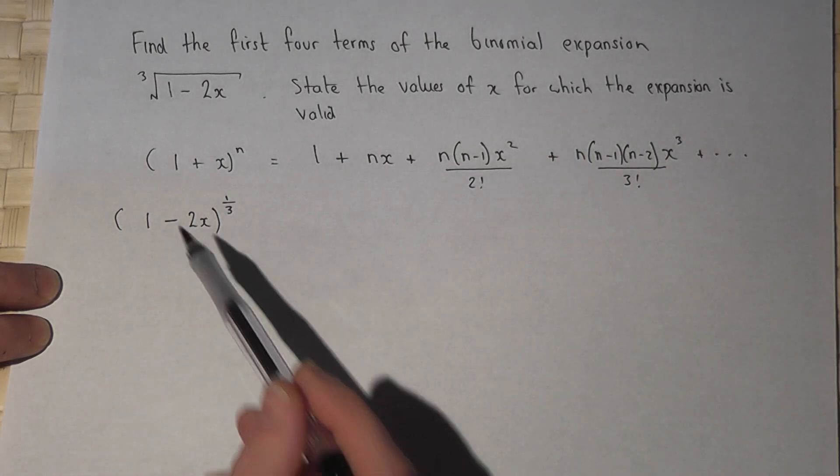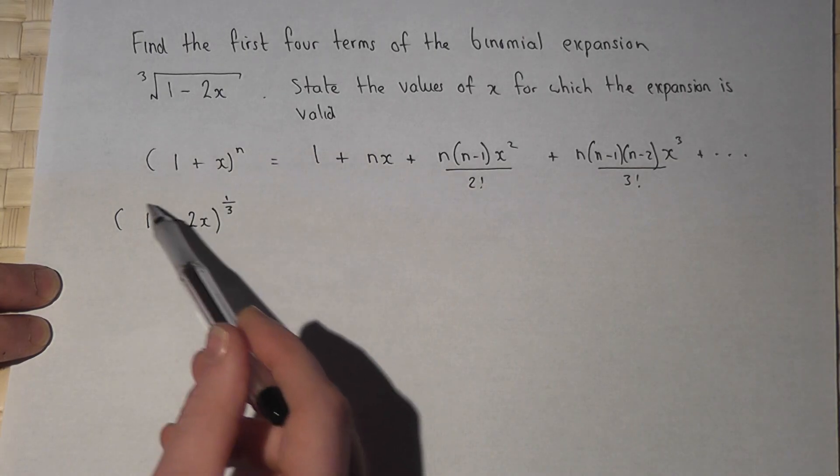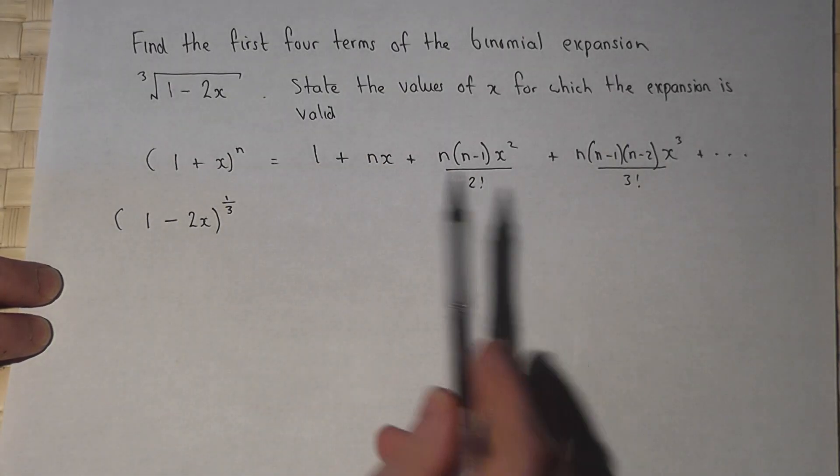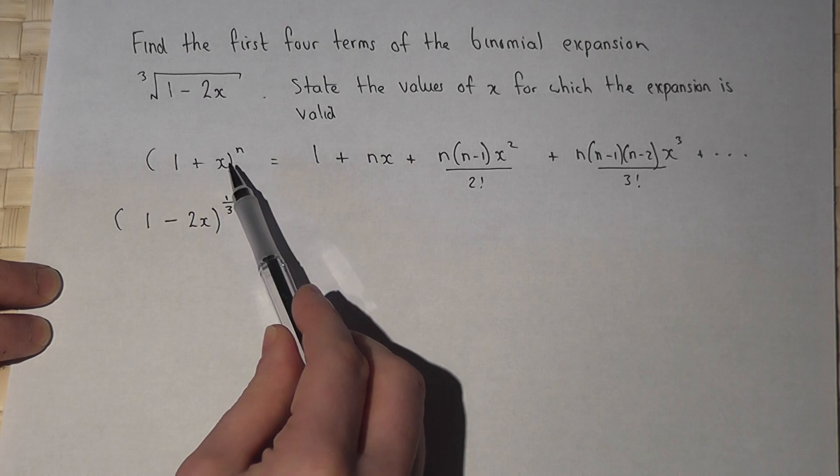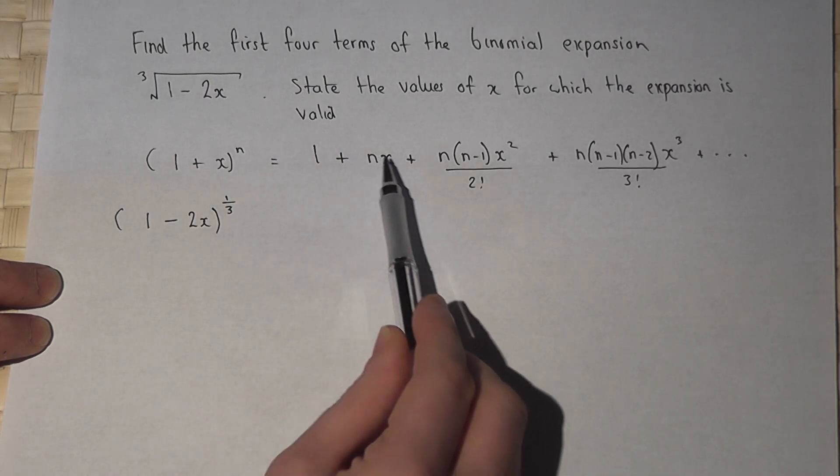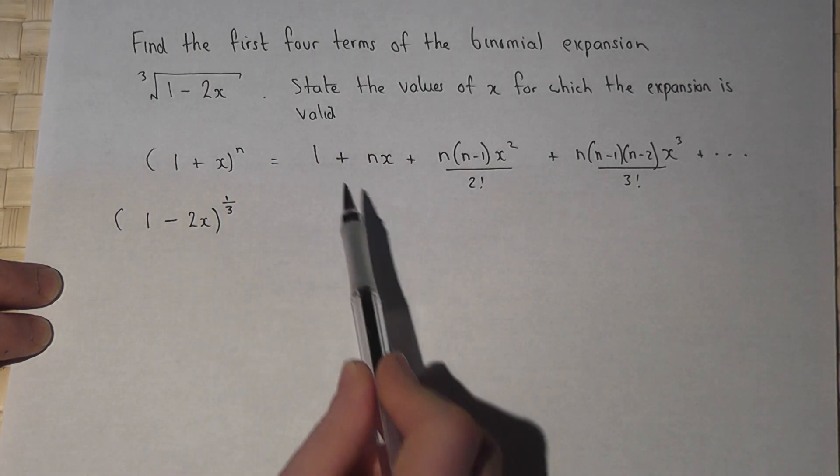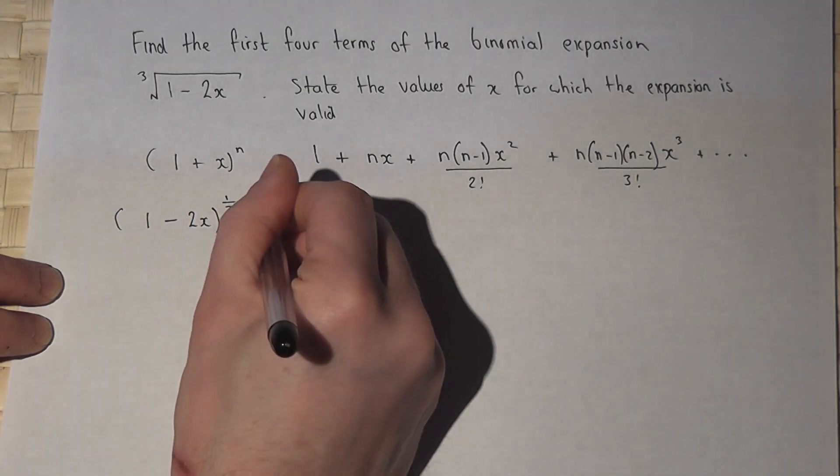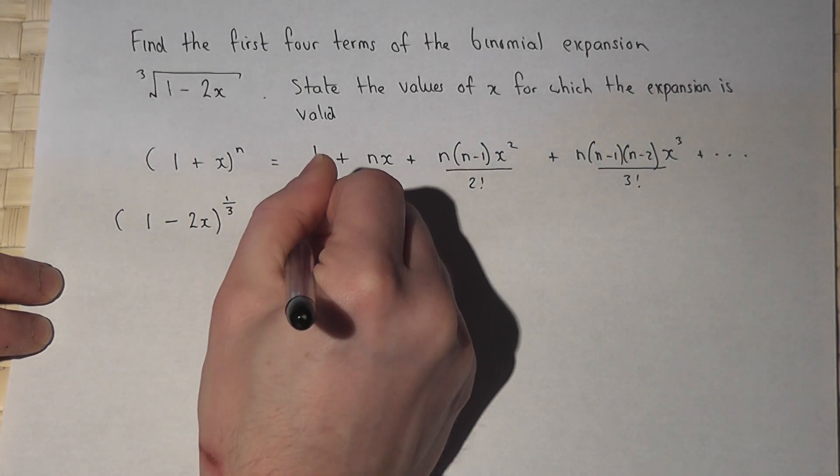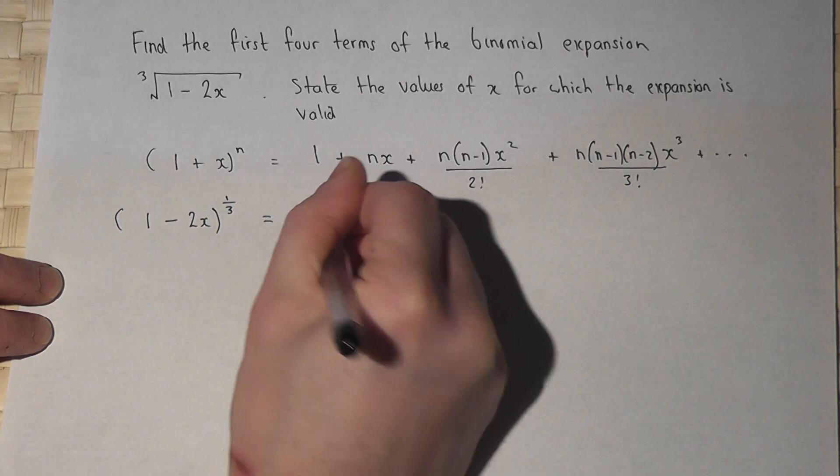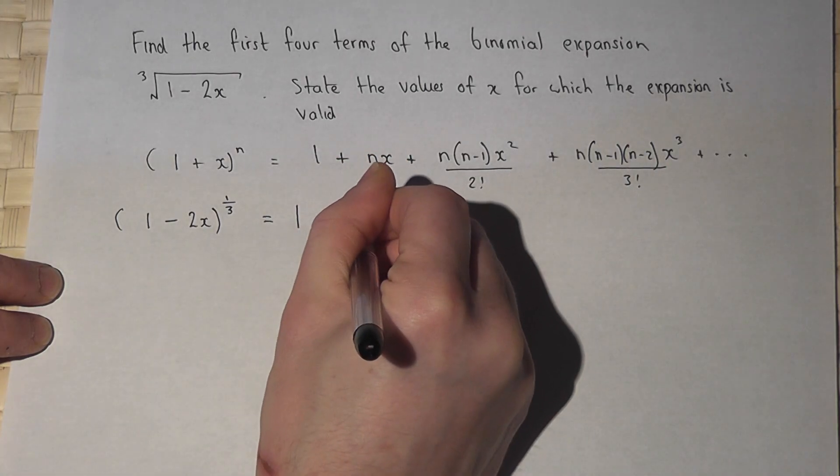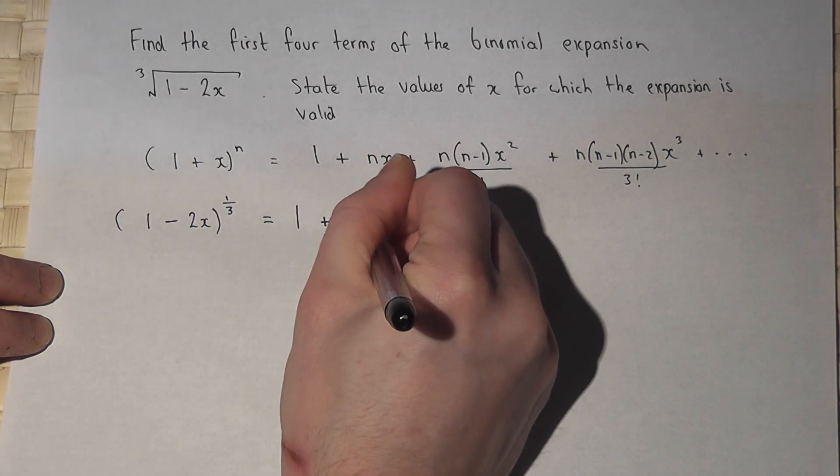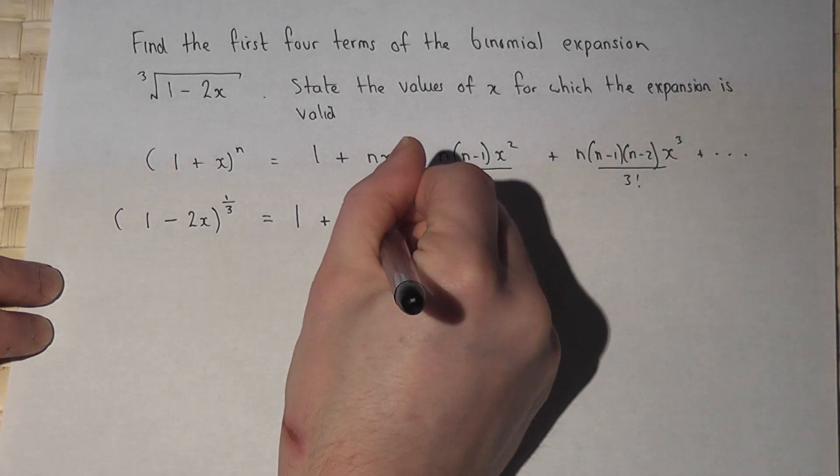The key thing here is there's a 1 at the start of the bracket. So I now have to put n equals a third and replace x by minus 2x in the general form. So here we go. I've got my 1. Now n is a third but where the x is I put a minus 2x in a bracket.